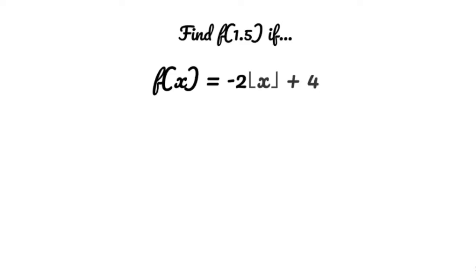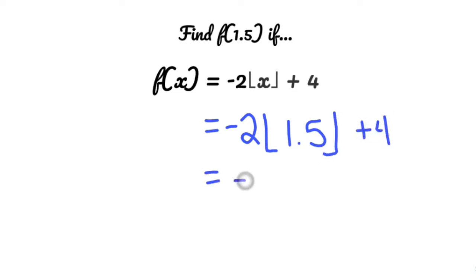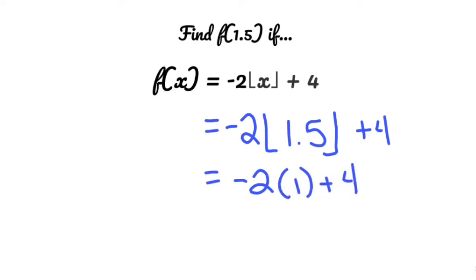A floor function takes any number and rounds it down no matter what. So if I plug in 1.5, that 1.5 is going to round down to a regular 1. So I have negative 2 times 1 plus 4.